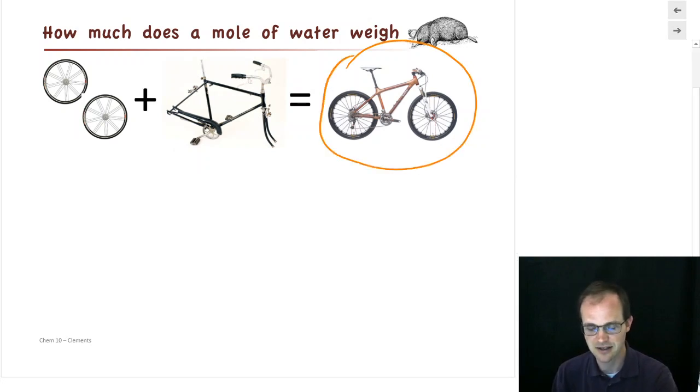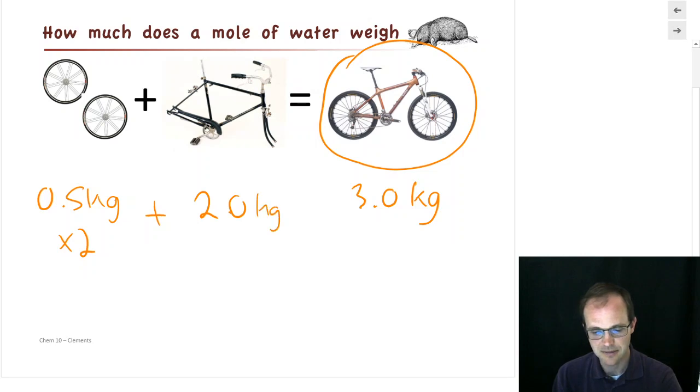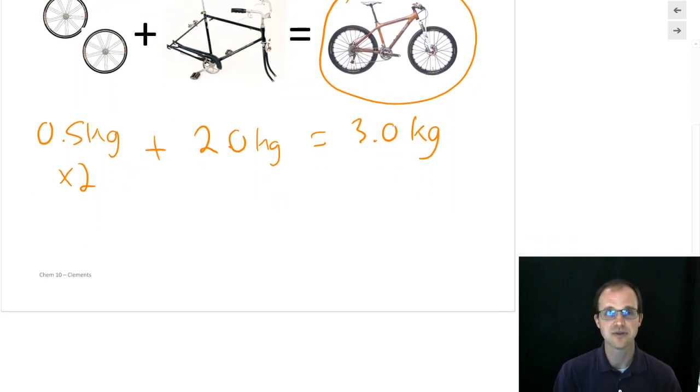And be like, the bicycle has a mass of 3.0 kilograms, a very light bicycle. Or, what we could do is, if we didn't have an assembled bike, we could have each wheel weighs 0.5 kilograms, and there's two of them. And then we could measure the mass of the frame, which is 2.0 kilograms. And if we add those up, we get the mass of a bicycle, which is 3.0 kilograms. Well, it turns out that's exactly what we do for water molecules. In fact, for all molecules.